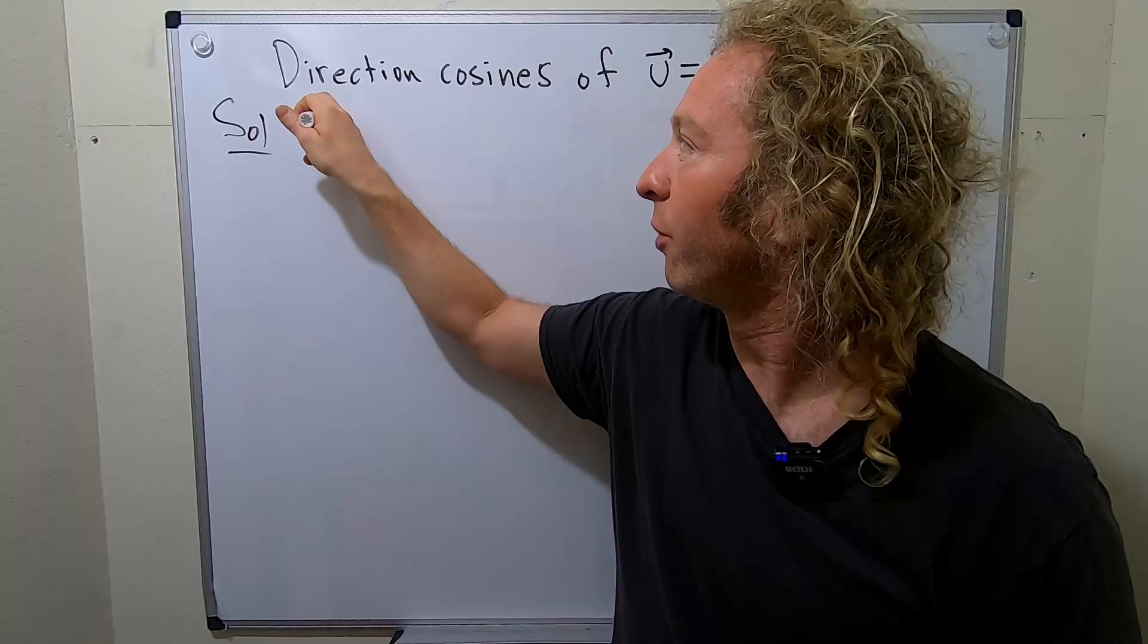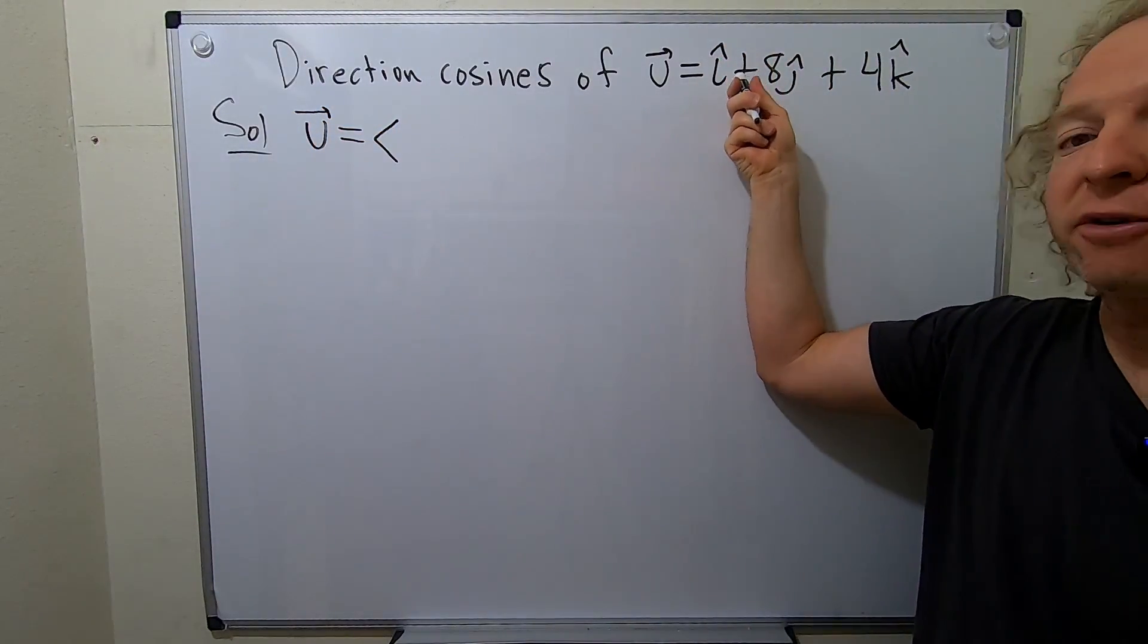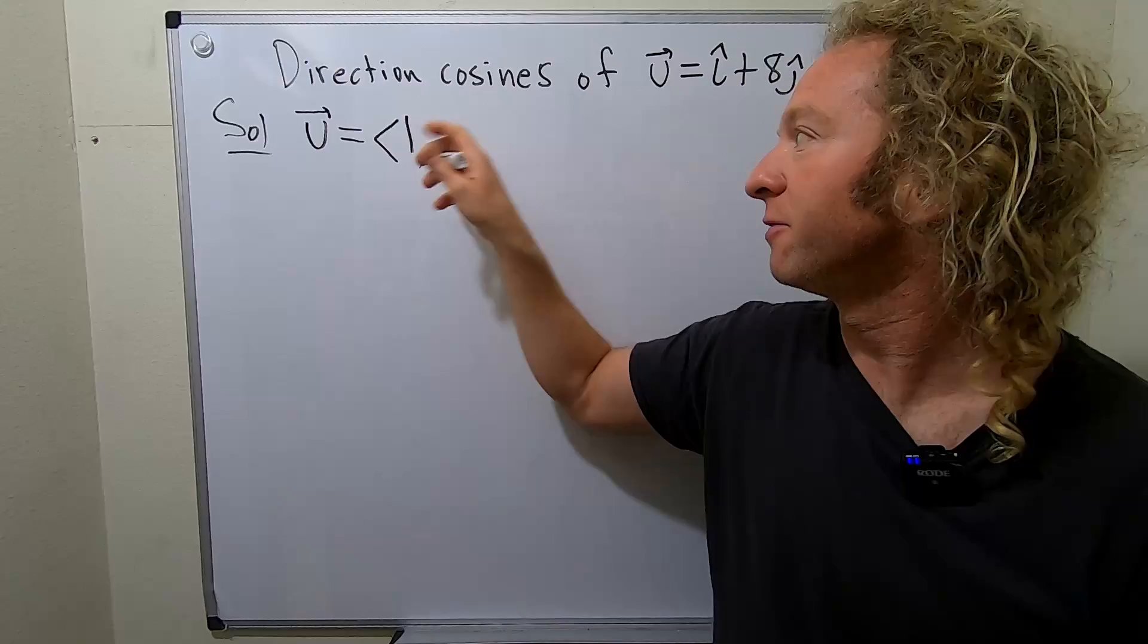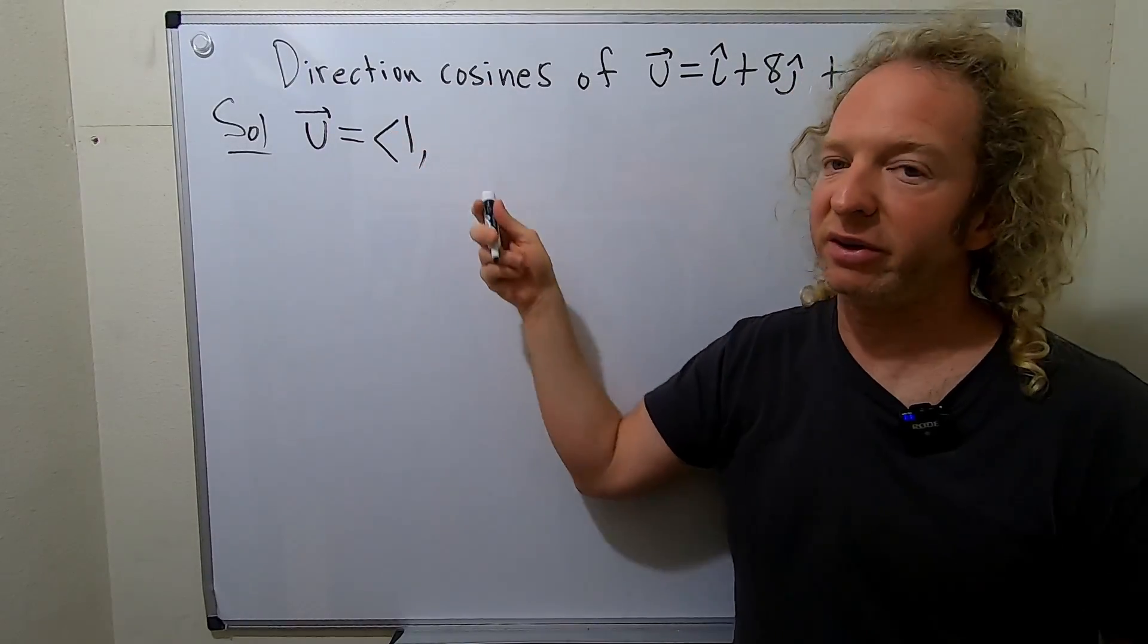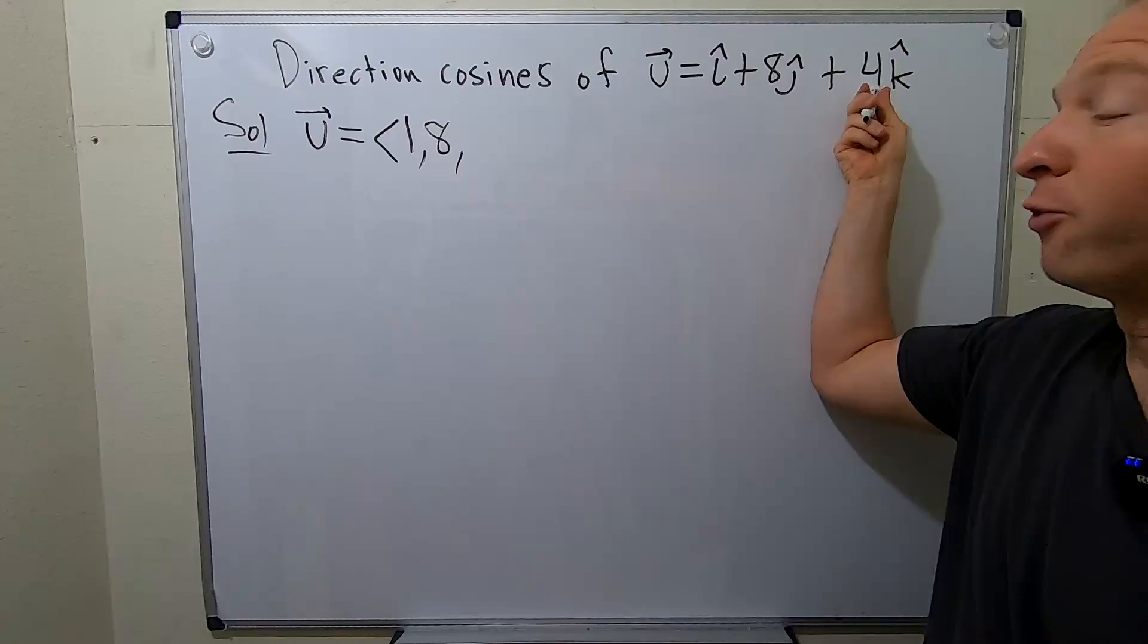So, in component form, we can write u as follows. There's a 1 in front of the i-hat, so it's 1. That's the first step, is you want to think of it like this. And then there's an 8 here, and then there's a 4 here.